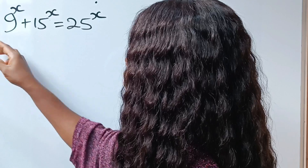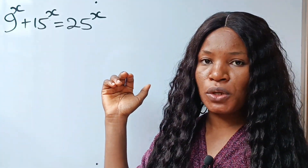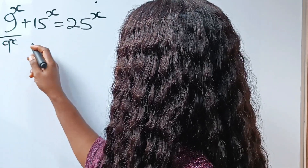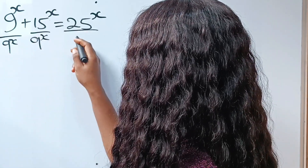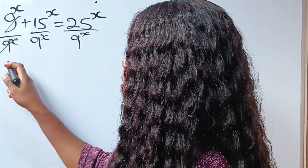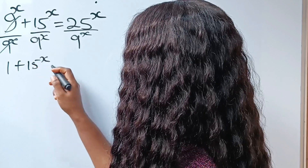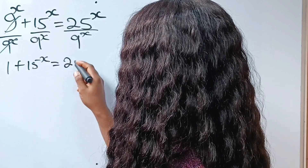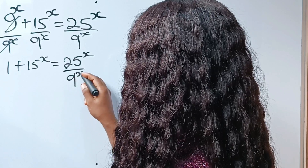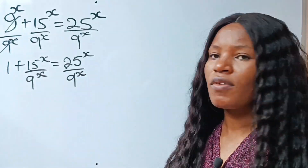The first thing we need to do is to divide through by 9 to the power of x in order to simplify this equation. So divided by 9 to the power of x, divided by 9 to the power of x, divided by 9 to the power of x. So when we do that, we are going to have 1 plus 15 to the power of x is equal to 25 to the power of x, divided by 9 to the power of x.